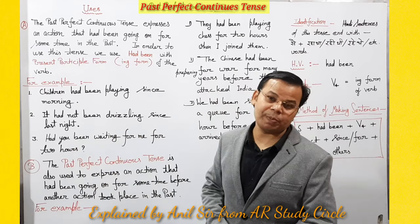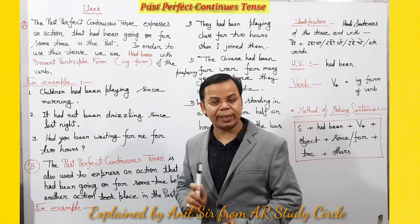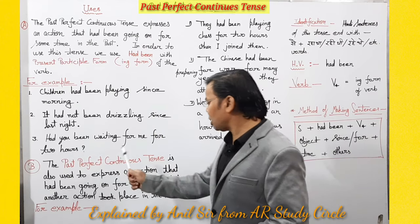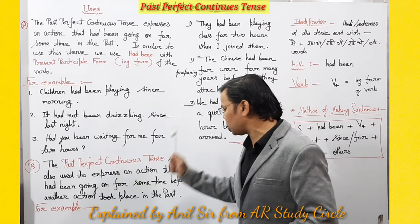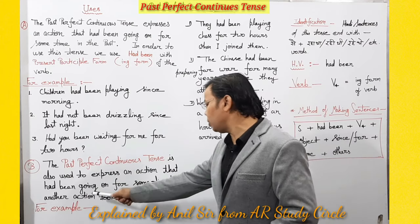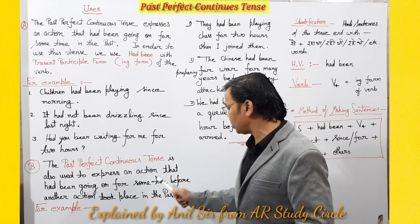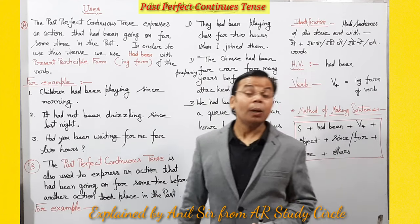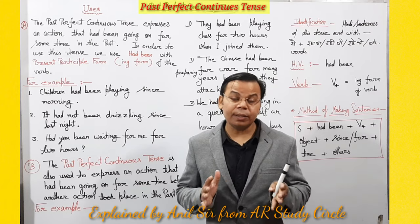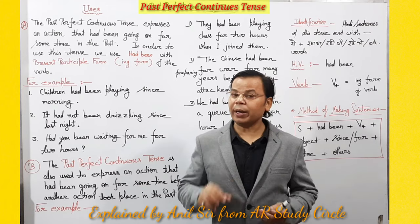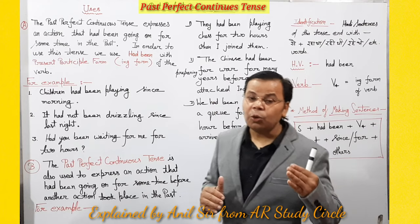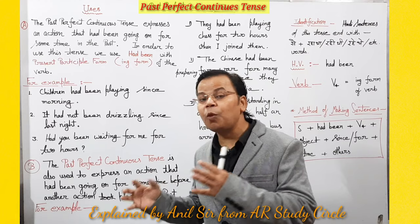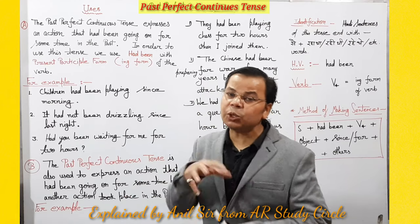The second use: Past Perfect Continuous Tense is also used to express an action that had been going on for some time before another action took place in the past. Yani Past mein kisi particular time se ho raha tha, lekin kisi doosre action se pehle — us situation ko express karne ke liye bhi Past Perfect Continuous Tense ka use hota hai.